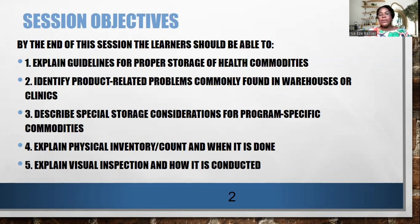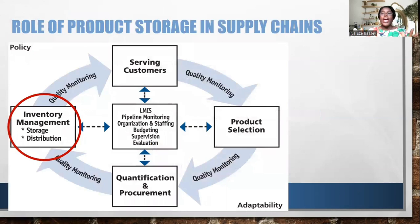You should be able to describe special storage considerations for program-specific commodities, explain what a physical inventory or count is and when it should be done, and explain visual inspection and how it is conducted. We are looking at the logistics cycle today because we want to see the role of product storage in supply chains.